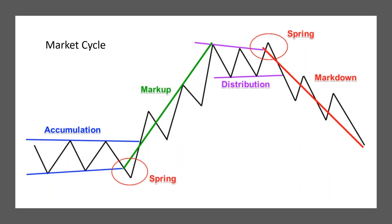Institutions operate through cycles of accumulation and distribution, as shown on this image. The length of these cycles can vary significantly and they can be seen across many major markets. The process begins with the accumulation phase — this is the process of buying as much of an asset as possible without moving the price significantly, until there is little left to buy at those prices. Usually this happens after a significant bear move or bear market. Once the selling has dried up and enough of the asset has changed hands, the resistance to higher prices has been removed.